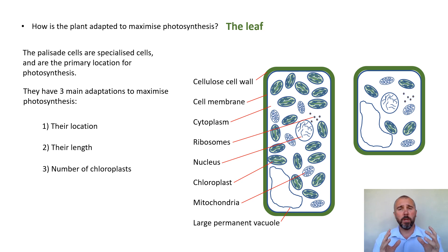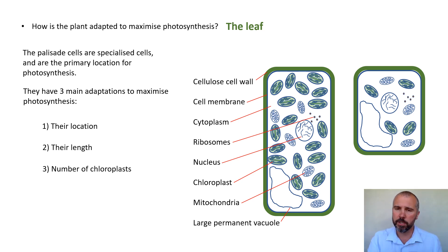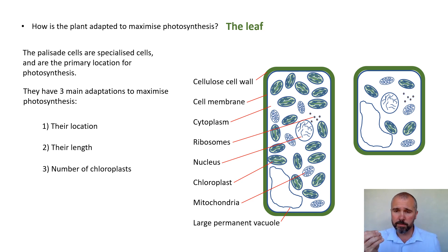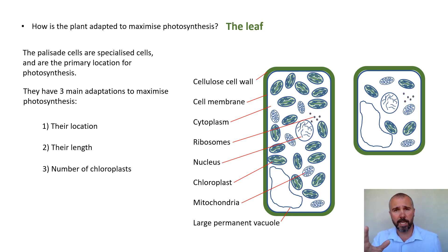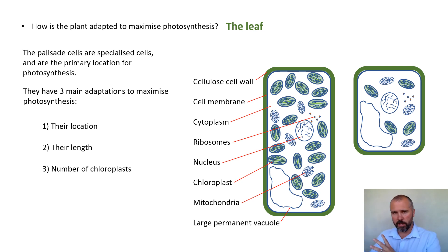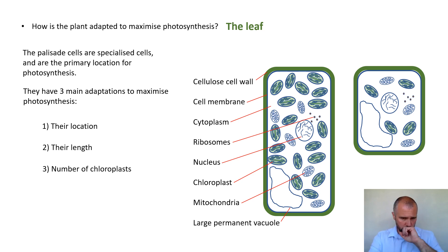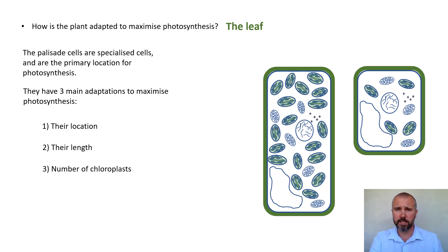Let's quickly review all the parts of a plant cell. You've got the cellulose cell wall around the outside to give structure, prevent bursting, and allow the cell to become turgid. The cell membrane acts as a skin, controlling what enters and exits. The cytoplasm is the liquid inside allowing everything to move. Ribosomes produce proteins. The nucleus houses the DNA — the instructions for building proteins. Chloroplasts do photosynthesis; mitochondria do respiration. Plant cells also have a large permanent vacuole for storage.